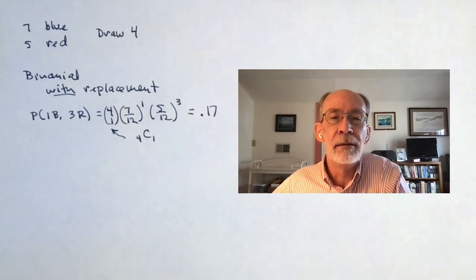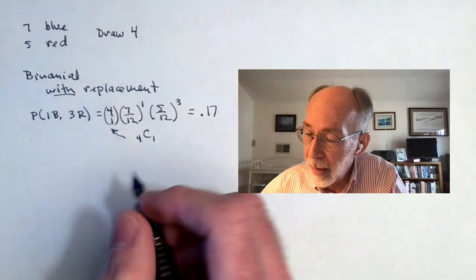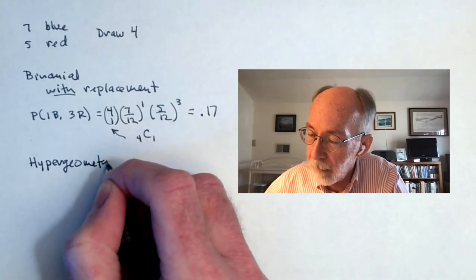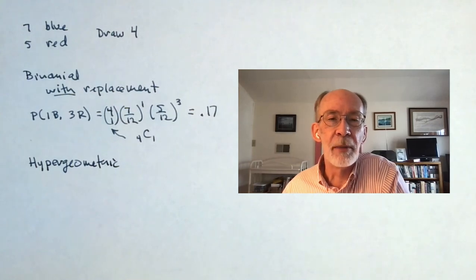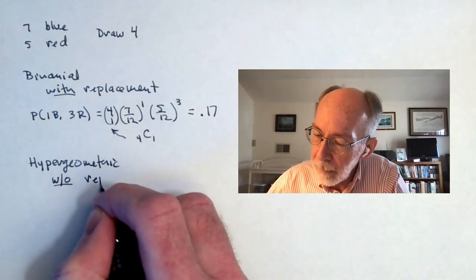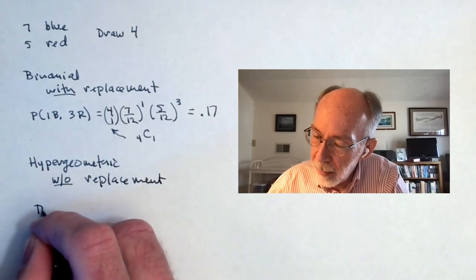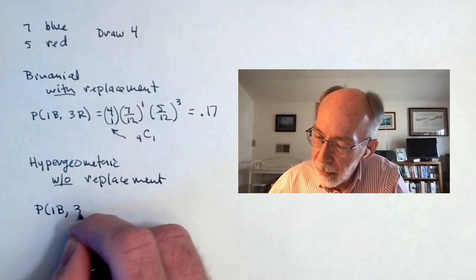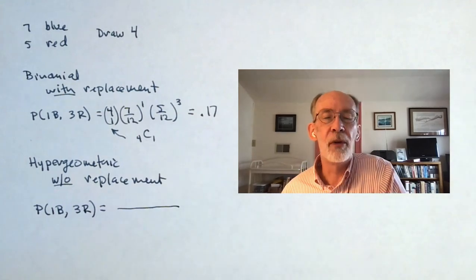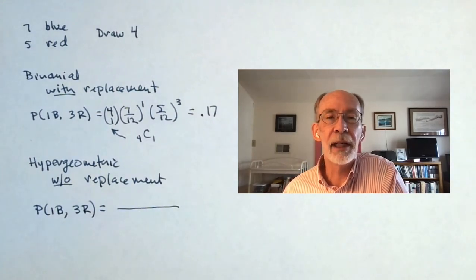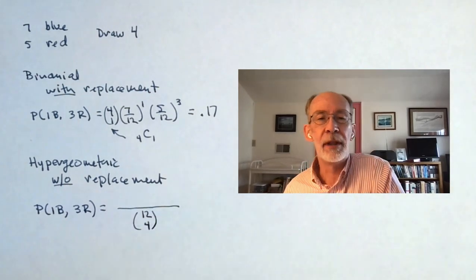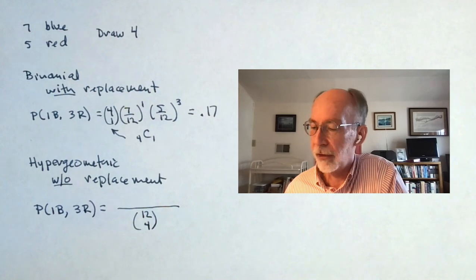Now, if we are not replacing, that's where we end up with this thing that we're going to call the hypergeometric. I wish somebody had coined a friendlier term for this because it's really not that unfriendly a concept. So this is without replacement. We want to know what's the probability that we again get one blue and three red. Well, my denominator is going to be the number of ways I can reach into the bucket of 12 objects and get four of them. And that, if you have some familiarity with combinations, is 12 choose four, the number of combinations of 12 things taken four at a time.